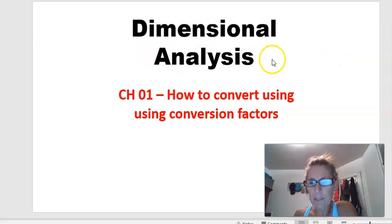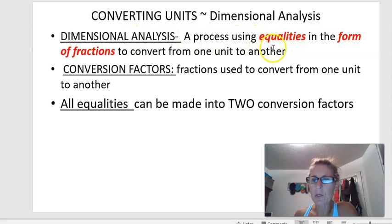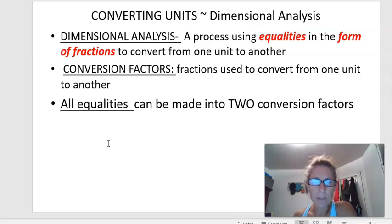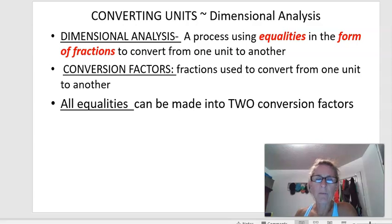Dimensional analysis is a really fancy way of basically saying converting using fractions. You may have done this in your math class. When it comes to dimensional analysis, it's a process using equalities — so like one gram is equal to 100 centigrams — in the form of fractions to convert from one unit to another unit, for instance from feet to inches, or from centimeters to feet, or from kilograms to centigrams. Conversion factors are fractions used to convert from one unit to another. We just call them in science conversion factors.